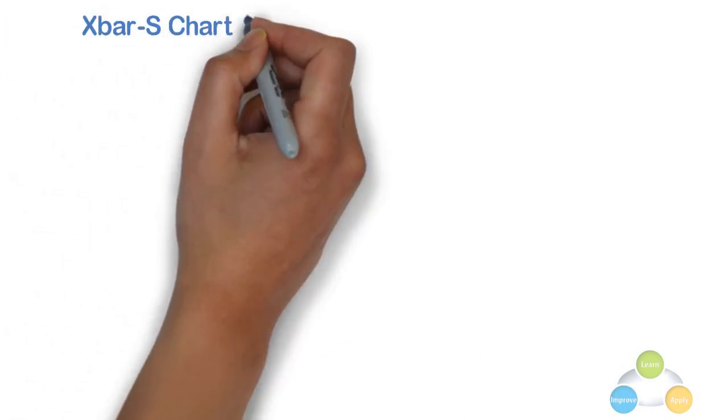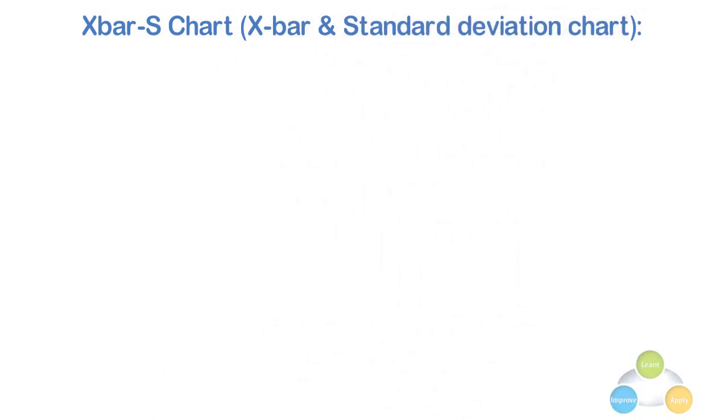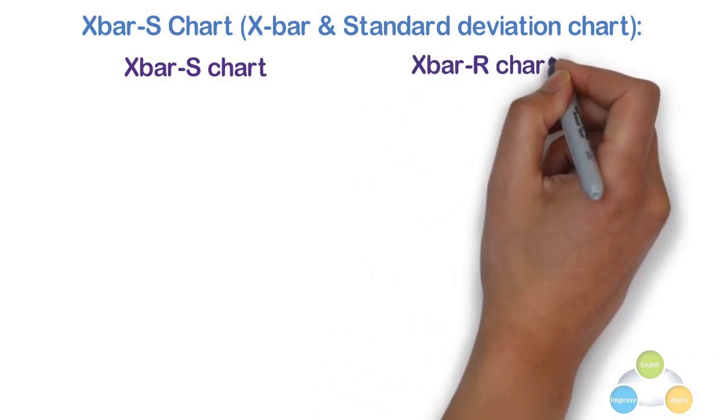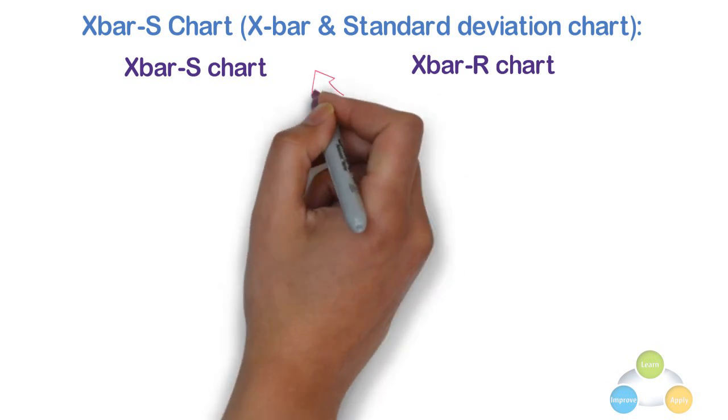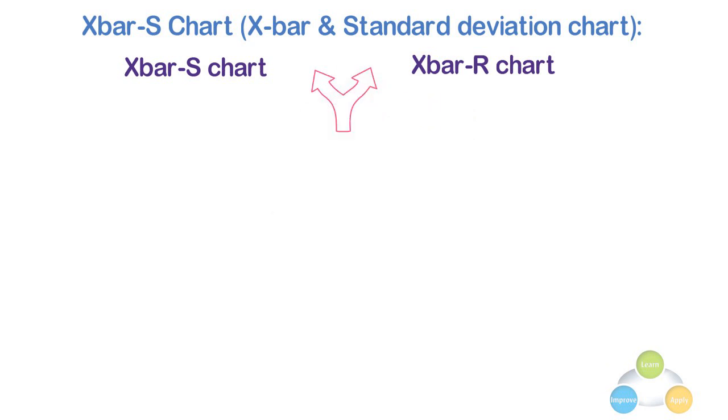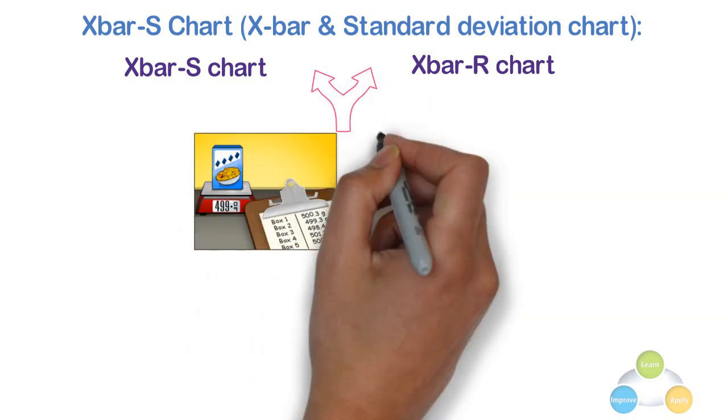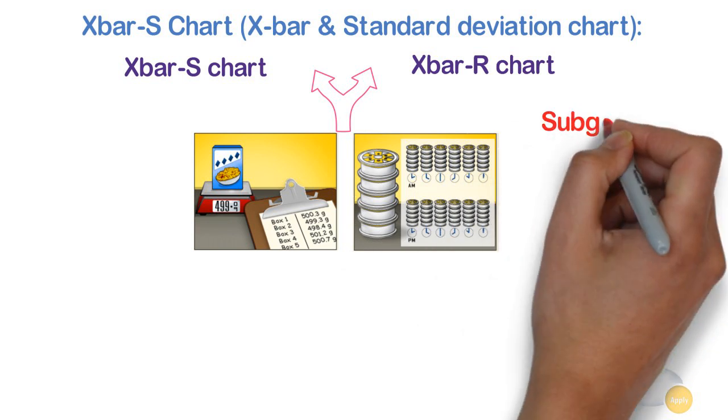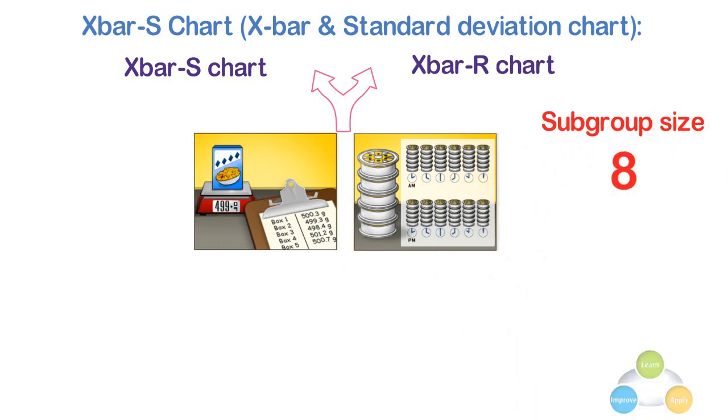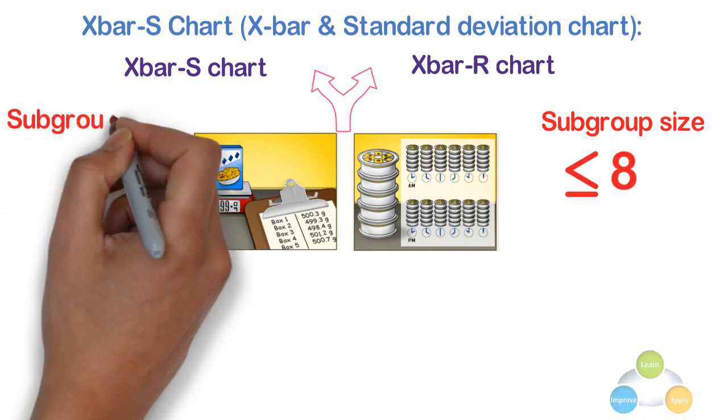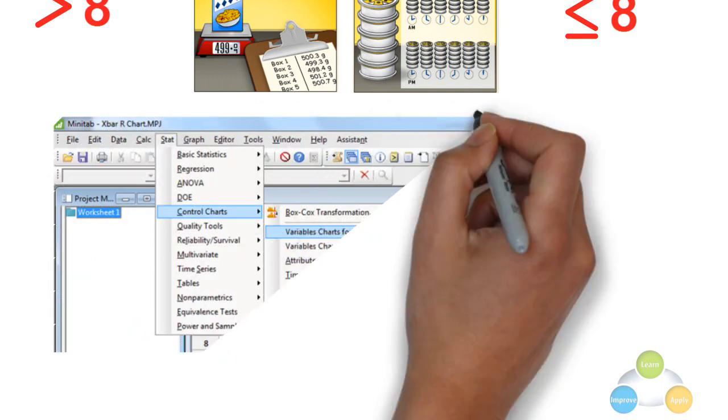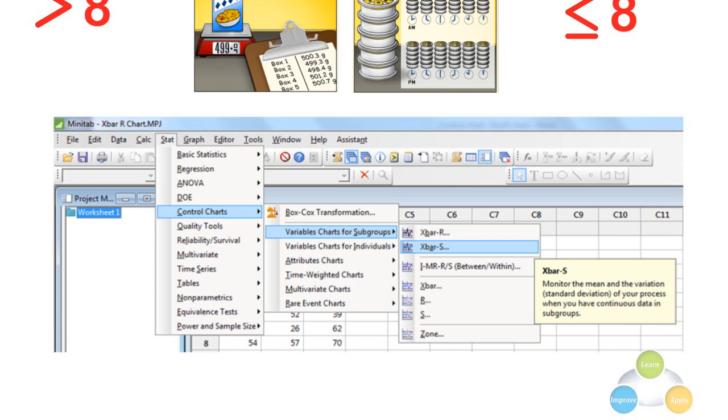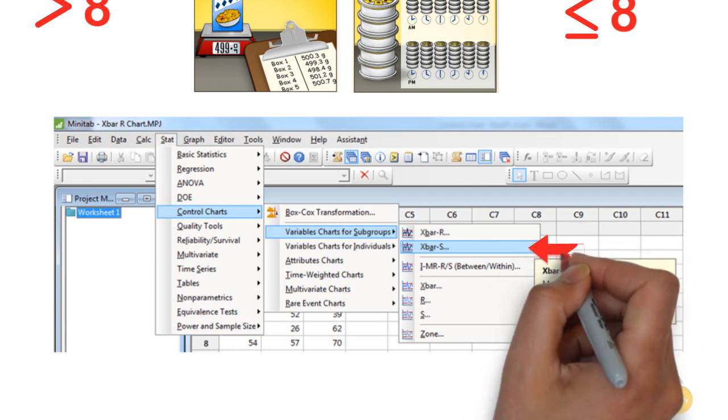Now let's see X bar S chart, i.e., X bar and standard deviation chart. The entire procedure for X bar S chart is similar to X bar R chart except a few points. Let me explain them so that both the charts along with their similarities and differences will be clear to us. Both charts are used when the data is continuous and data collected in subgroups. But if subgroup size is 8 or less than 8, we have to use X bar R chart. And if it is more than 8, we have to use X bar S chart. In creation of X bar S chart, the procedure is similar to the X bar R chart except you have to use the option of X bar S chart instead of X bar R chart.